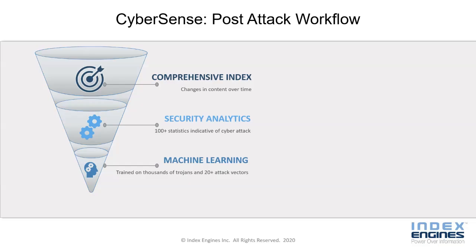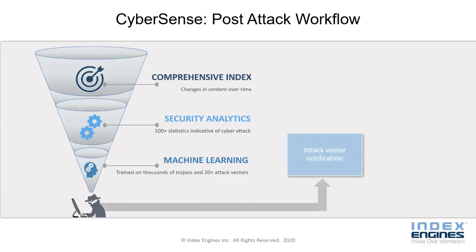It then applies machine learning trained on thousands of Trojans and over 20 attack vectors to produce a deterministic integrity check on the data. If there is an attack, CyberSense outputs the specific attack vector that was executed, giving the cybersecurity team detail on what type of ransomware is being used.